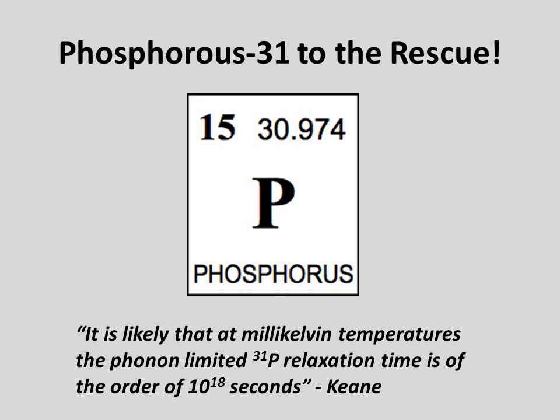Kane suggests a solution, which is to use phosphorus-31 as an embedded impurity. Nuclear spins of phosphorus atoms, unlike other possible qubits, operate in what has been termed extreme isolation, especially within enriched silicon-28 systems.